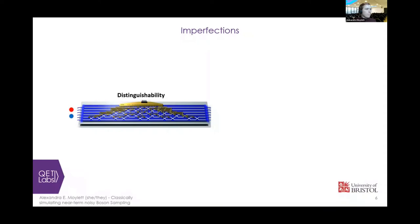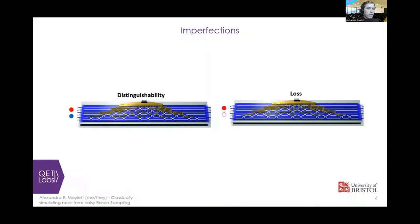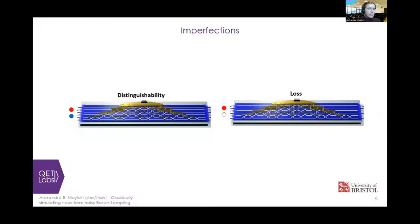The other imperfection, like I said, that I'm looking at is photon loss, which also has a nice metaphor in juggling, which is where we start out with more photons than we finish with, such as here. So those are the two imperfections I'm going to be looking at.